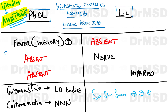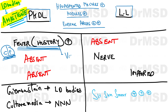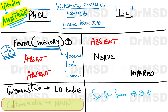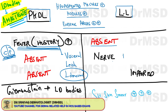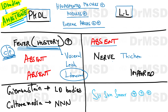If the examiner wants you to diagnose PKDL, the history of prolonged fever will be given — this is a very important clue pointing toward visceral leishmaniasis during childhood, caused by Leishmania donovani. In lepromatous leprosy, no such history of prolonged fever is mentioned; instead, clinical examination findings of nerve thickening and impairment of sensations will be given in the question.